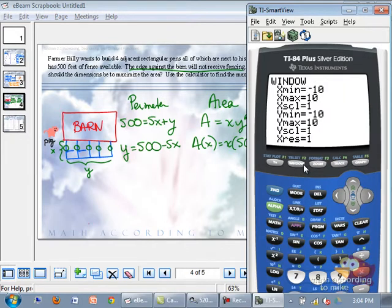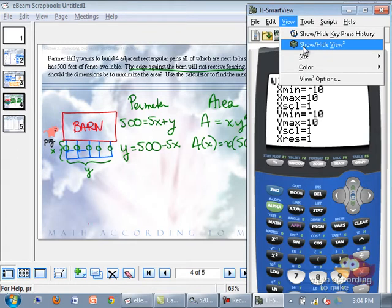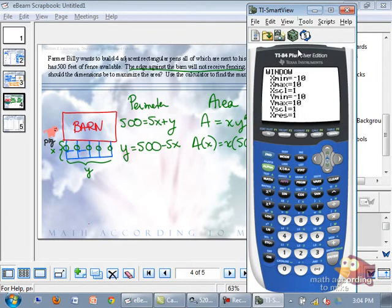We're going to make the x min negative 10. I need to make this smaller so it fits, I apologize. X min negative 10, we're going to make the x max 100, and we're going to make the scale 10, so that means every 10 is a tick mark. Y min will make negative 10, y max 15,000, and the y scale a thousand. All right, here graph.